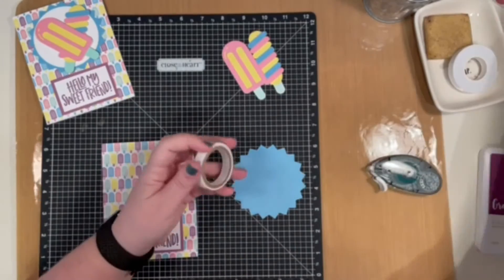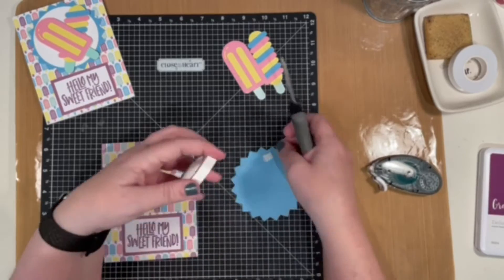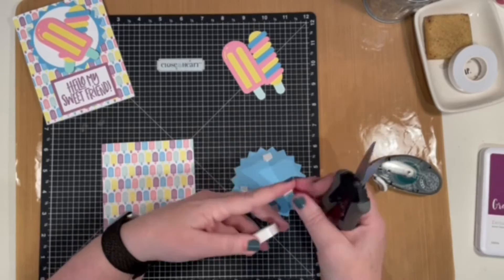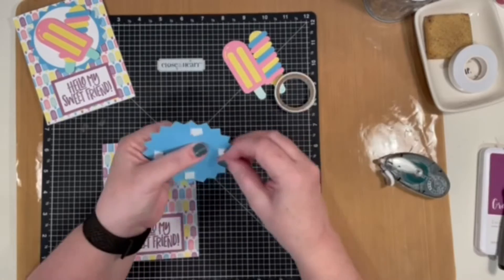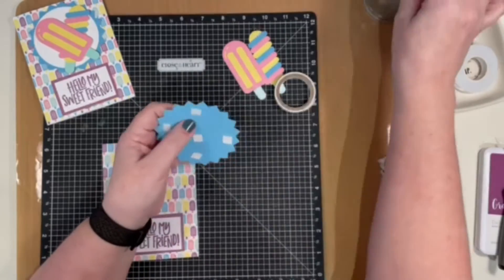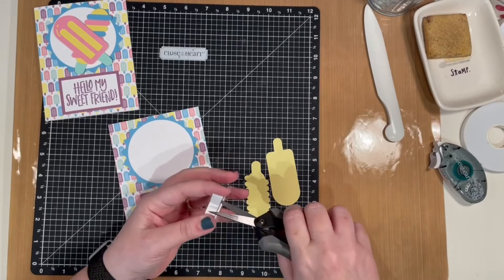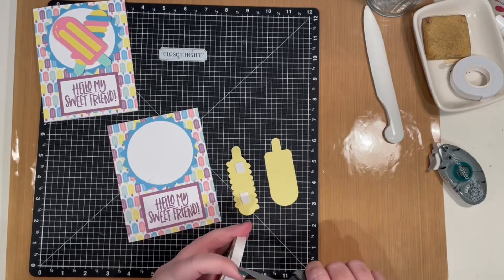For this white daisy and Capri piece, you're going to use thin 3D tape. I just did four around the outside and then one in the middle. You're going to put that at the top portion of the card.